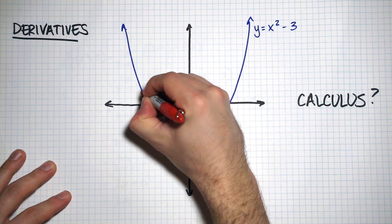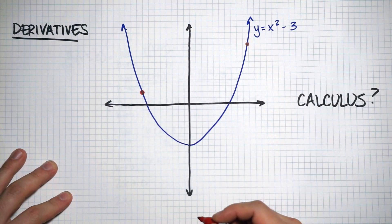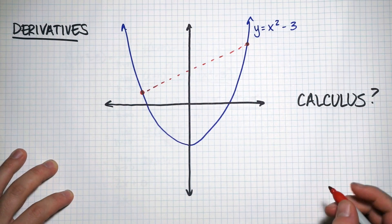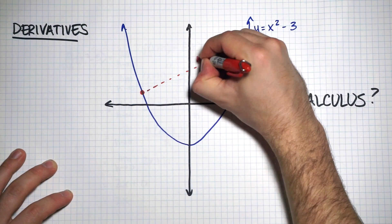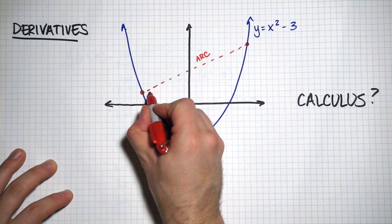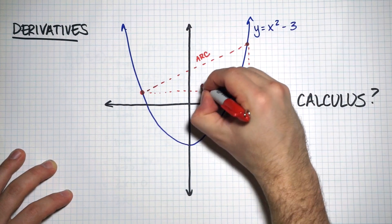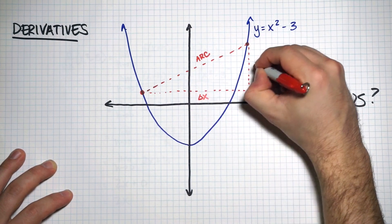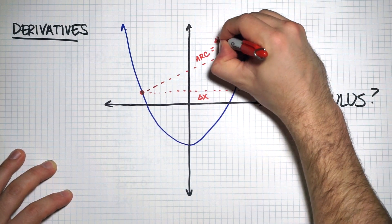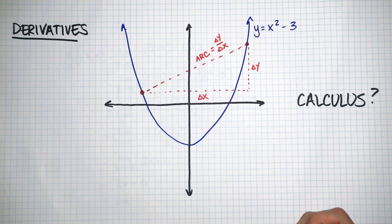Let me pick a point and say we want to find the average rate of change between that point and that point there. What we're doing is connecting those two points and finding the slope between them — that's the average rate of change. We're finding the change in x, which we call delta x, and the change in y, which we call delta y. The average rate of change is just delta y over delta x.